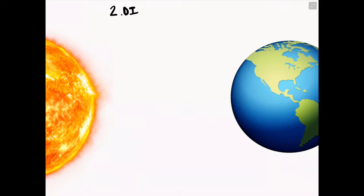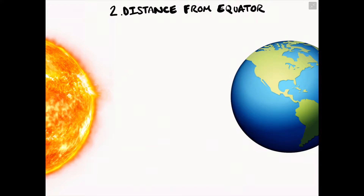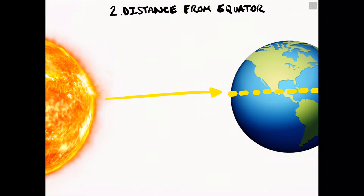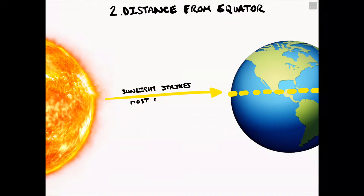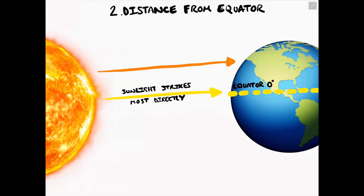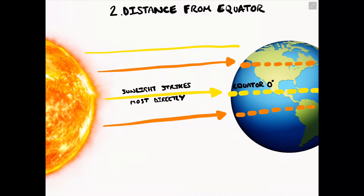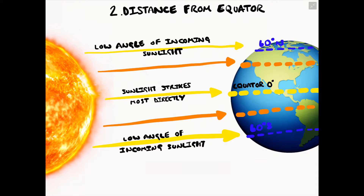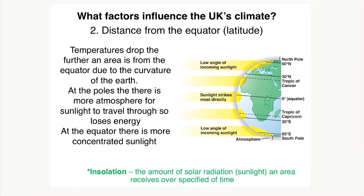The second factor which influences the UK's climate is distance from the equator. The sun sends solar radiation towards our planet. At the equator, sunlight strikes most directly and is most intense, leading to a more concentrated level of sunlight and warmer temperatures. At 30 degrees north and south of the equator we receive less direct sunlight, whereas at 60 degrees north and south there is a low angle of incoming sunlight, meaning lower temperatures and Arctic tundra and polar biomes.